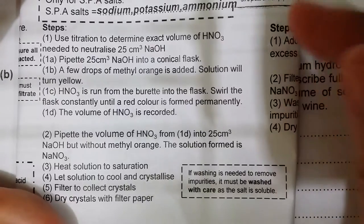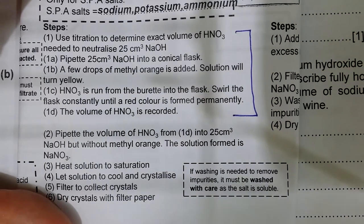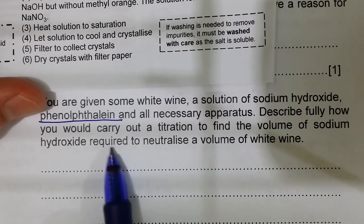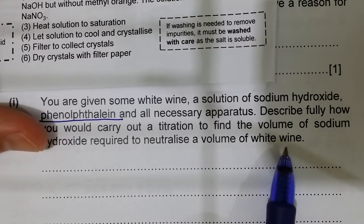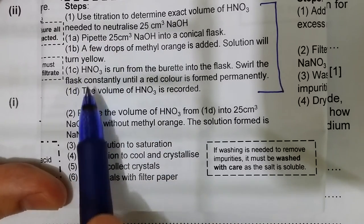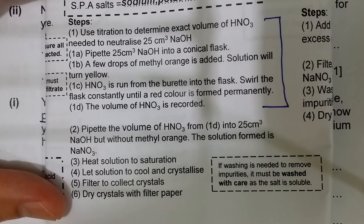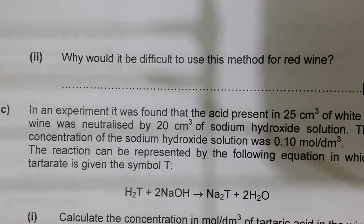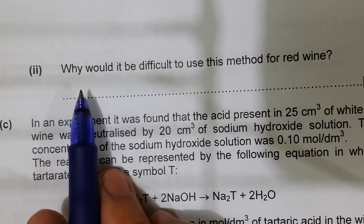Why would it be difficult to use this titration method with red wine? Because phenolphthalein turns pink in alkaline solution. If red wine is used, the color of the wine would mask the indicator color, making it very difficult to observe the color change. The answer is: the color change of the indicator would be difficult to observe.